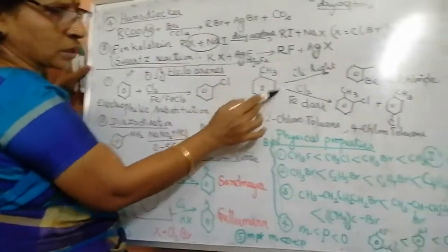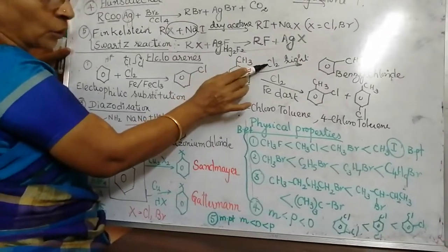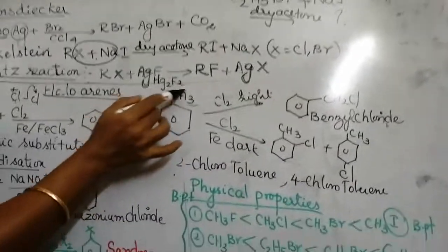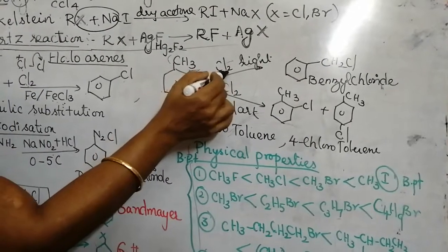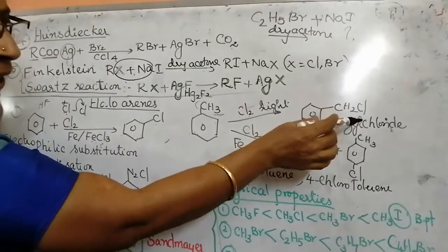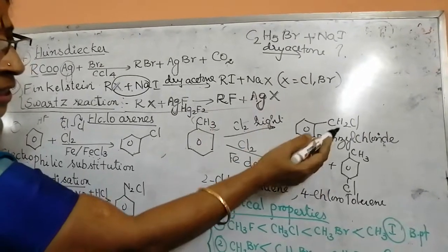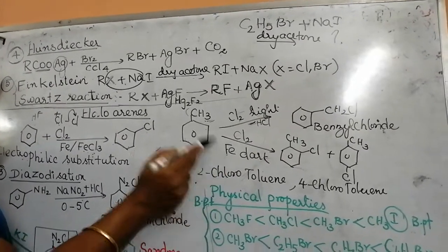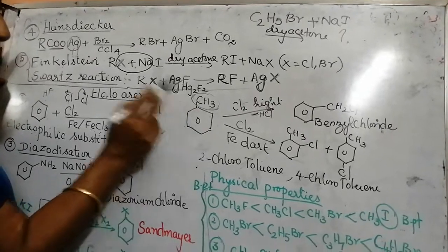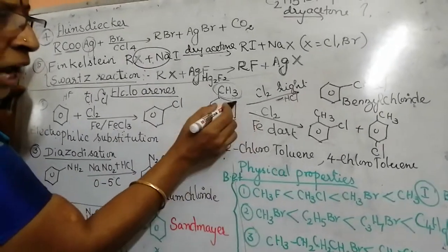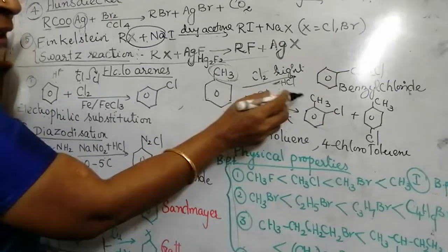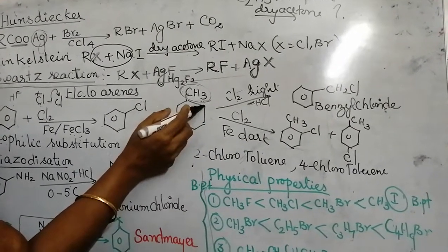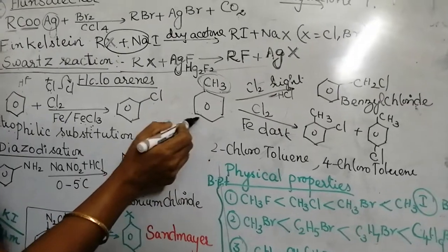Now, let us go to toluene. When toluene is treated with chlorine in presence of UV light, then the hydrogen of this toluene methyl group will be substituted by chlorine and you will get benzoyl chloride, plus HCl will be removed. Then, if it is treated with chlorine in presence of dark with Fe, this methyl group is an ortho-para director. That means, it will allow the incoming electrophile - right here also, the electrophile is Cl - either go to this ortho-position, that is the second position.